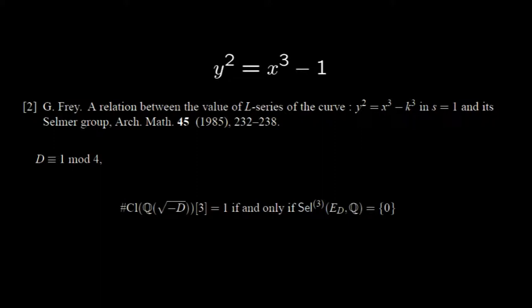Therefore, it follows that there is a positive proportion of square-free integers d such that the Selmer group and hence the Mordell-Weil group are trivial.